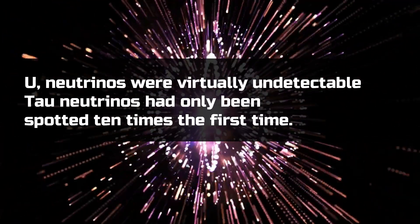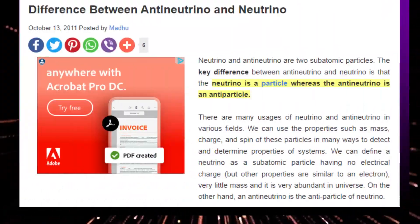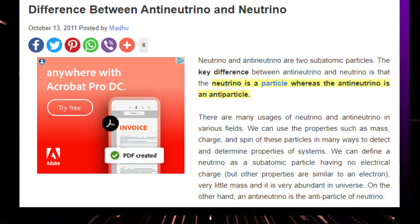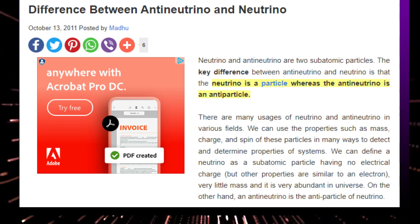Tau neutrinos had only been spotted 10 times the first time, sufficient to detect distinct flavors of neutrinos. However, it can also differentiate between neutrinos and anti-neutrinos, which is where things start to get interesting.